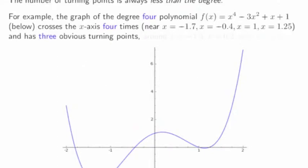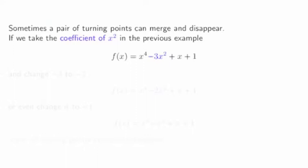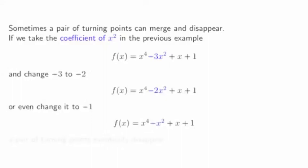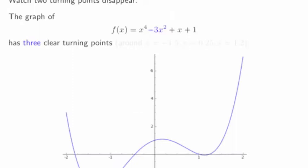This graph, if we look to the far left, is dropping, goes below the x-axis, and then somewhere around minus 1.25, it turns around and heads back up, reaches the top, drops back again, and then shoots back up — turning around three times, near minus 1.3, near 0.2, and near 1.1. Sometimes, a pair of turning points of a graph can merge or disappear. Consider the polynomial x to the fourth minus 3x squared plus x plus 1. If we start changing the coefficient of x squared, we start getting different graphs, and a pair of turning points begin to merge and disappear two at a time.